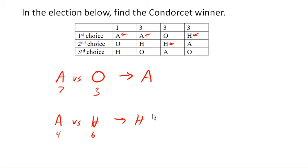How about O versus H? So if we look at O versus H, O is preferred here, H is preferred here, O and H. So we have one, two, three, sorry, one and three is four people preferring O, and six people preferring H. So H is preferred.